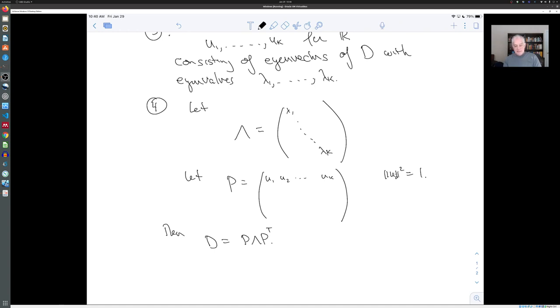This is sometimes called the spectral decomposition of D. It says that D is the product of a matrix P which is orthogonal. Maybe this is worth pointing out: P times P transpose is equal to the identity matrix because of the orthonormality. If you multiply P times P transpose, the entries are the dot products of the columns, which are all zero except on the diagonal where they're equal to one. In other words, P transpose equals P inverse, which means that P is what's called an orthogonal matrix.